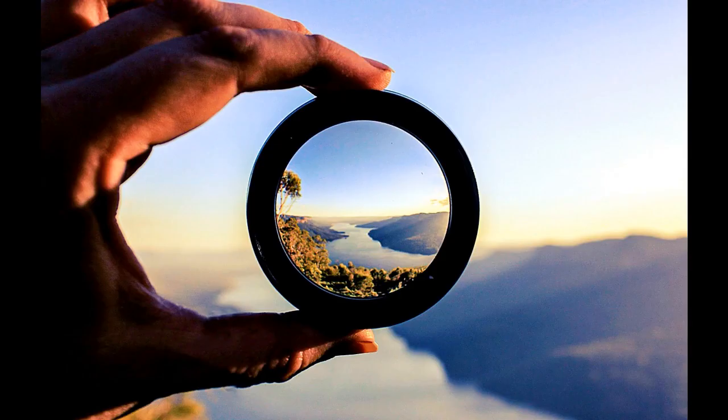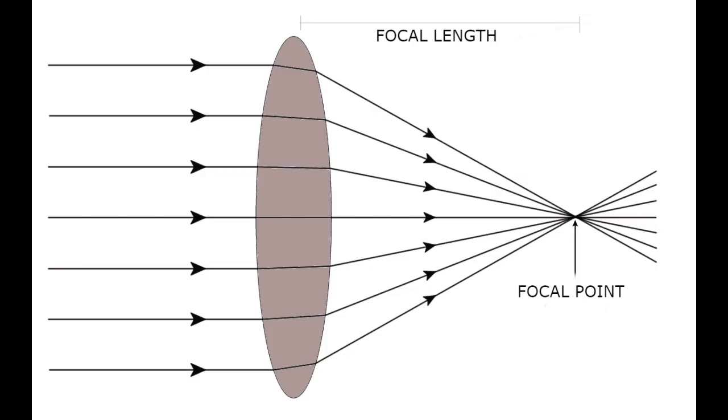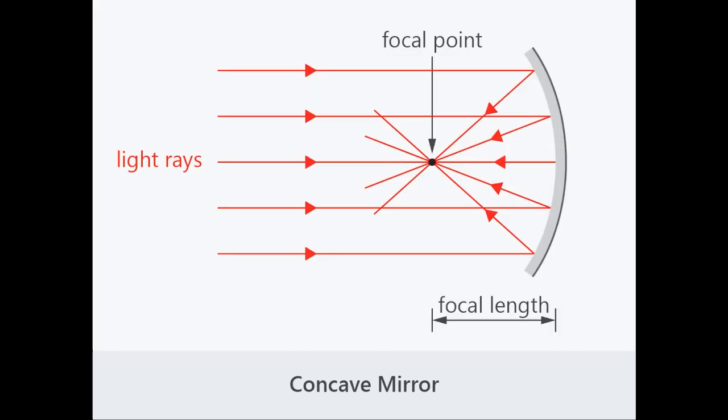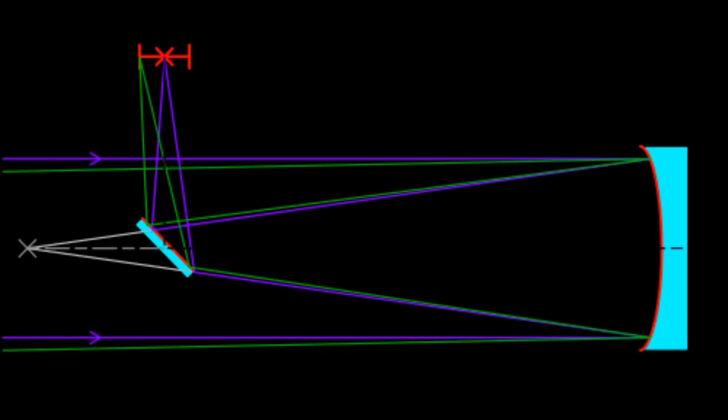All optical telescopes function on the principle of bending light. Refracting telescopes do this by using lenses to refract the light. Reflecting telescopes use mirrors. In all cases, the parallel light rays of a distant object are gathered and bent to converge and form an image.